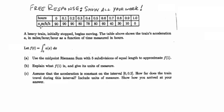Basically, you have this table with time versus acceleration. You have a heavy train initially stopped that begins to move. The table above shows the train's acceleration in miles per hour per hour as a function of time measured in hours.